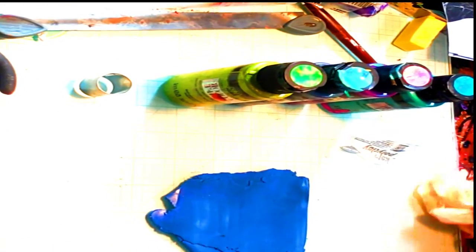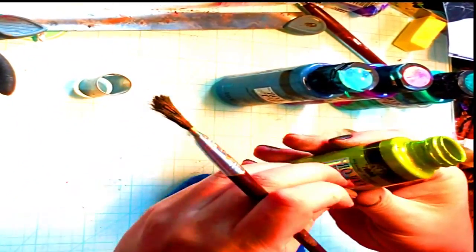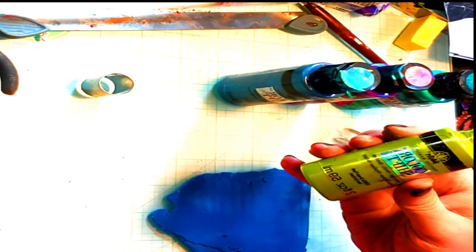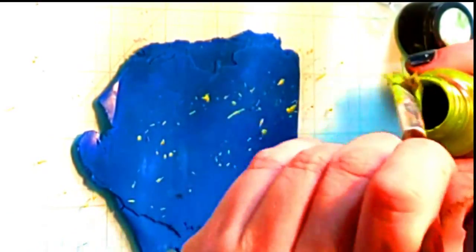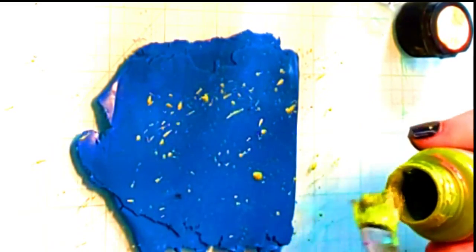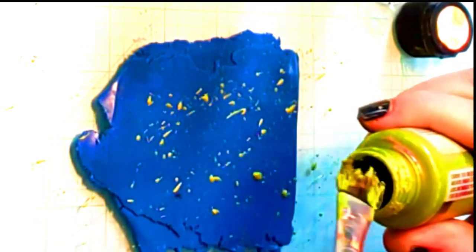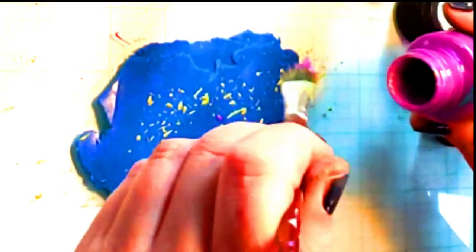I rolled out the electric blue Kato clay in the thickest setting of my pasta machine. And I'm using, I cleaned off my paintbrush, of course, between each color. And I am using color-shifting paints to splatter on the blue color and I won't waste your time showing you each and every color. So I'll just show you the green and the purple. It is kind of fun to watch the splatter go onto the clay. So this is the color-shifting green and this is the color-shifting purple. I also did color-shifting turquoise.